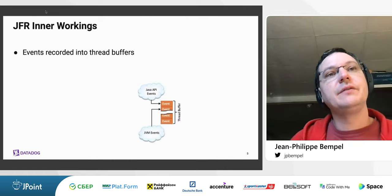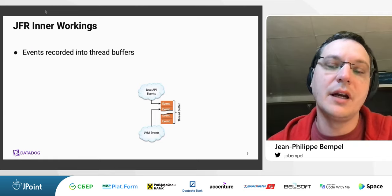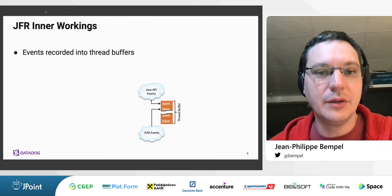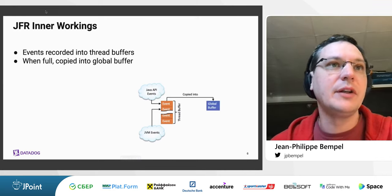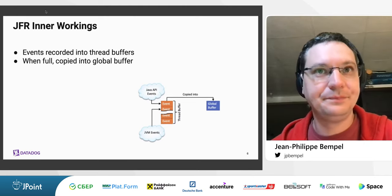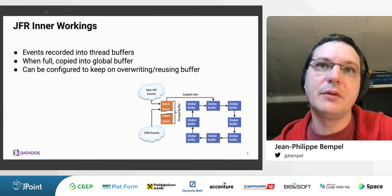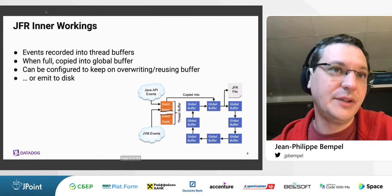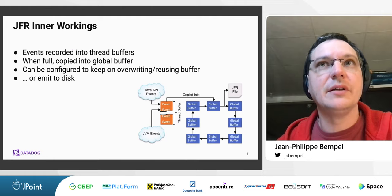Internally, JFR has thread-local buffers to emit events into, which avoids contention while the thread of your application is emitting events. Once the thread-local buffers are full, they get copied into a set of global buffers. Depending on the configuration, these buffers can simply keep overwriting and decide to dump at some point, or emit them to disk for further analysis on your local machine or security system.